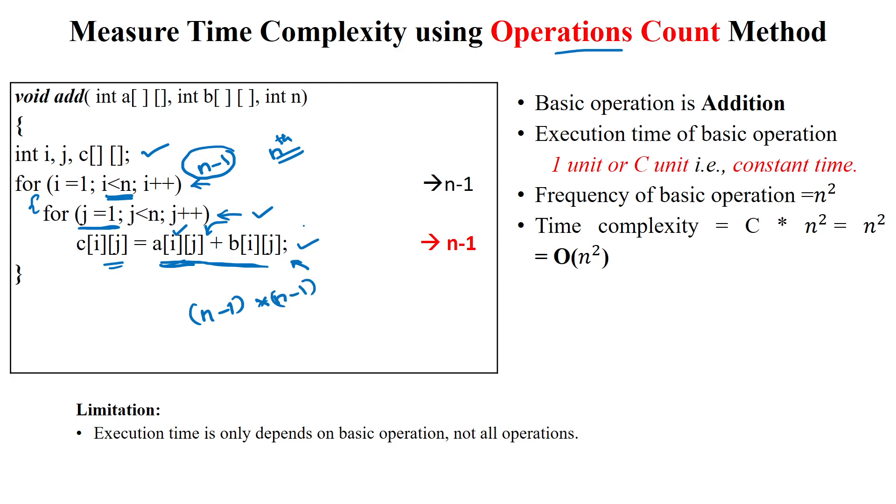What is the time consumed by this operation for each time? It will consume one unit of time each time it is executing. So, the basic operation is found, that is the addition, and the execution time for the basic operation is one unit of time or constant unit of time.